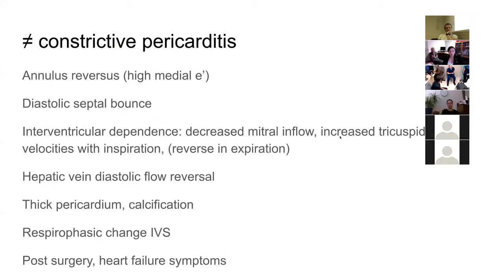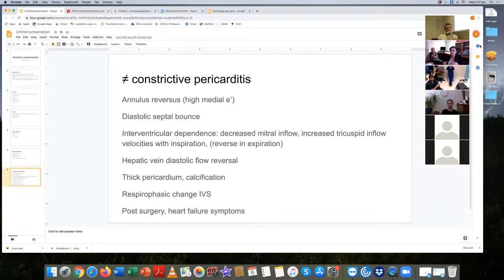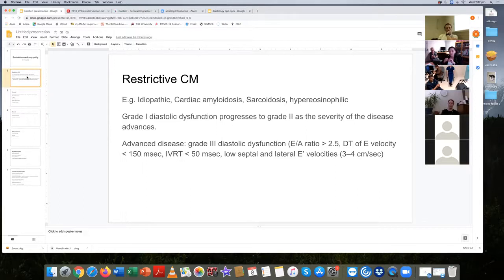A participant shares a case where patients they'd seen were already known to have cardiac amyloid. One patient had an unclear diagnosis at presentation and was actually taken to surgery for a pericardiectomy for what was thought to be constrictive pericarditis — which didn't help. It turned out the patient had restrictive cardiomyopathy, presenting with heart failure symptoms and elevated filling pressures with a pericardium thought to look abnormal.